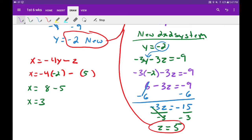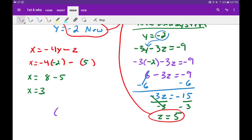Now that I have all the variables solved for, I can put it in as an ordered triple. So I got 3 comma negative 2 comma 5. Remember it's x, y, z, and that is our solution.